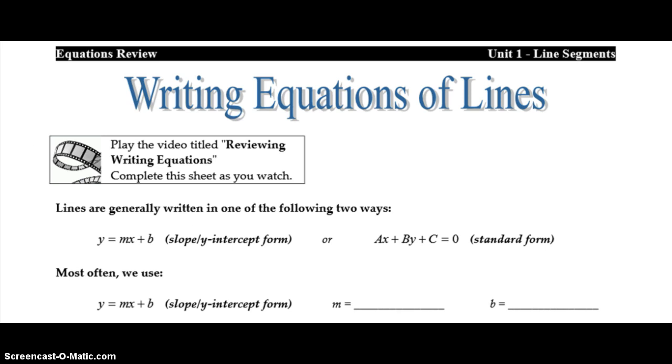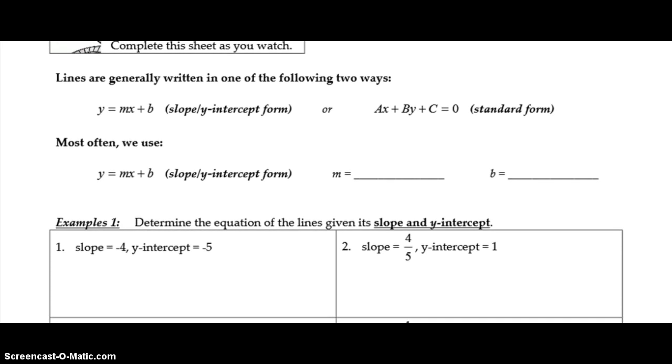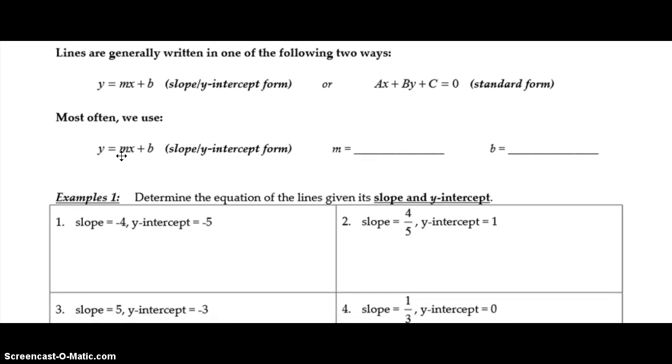Most often we will use y equals mx plus b. This format is helpful because when we have it this way, we know the slope and the y-intercept of the line. So m represents the slope of our line. It's always the number in front of the x when we have our equation in this format. And the b represents our y-intercept.